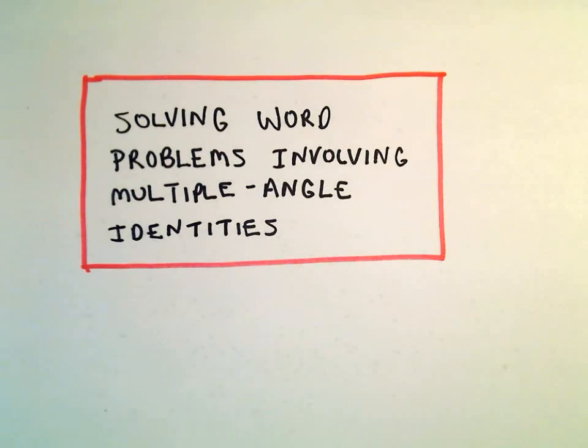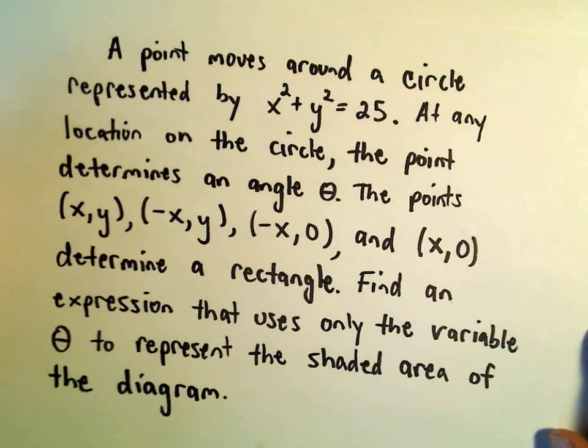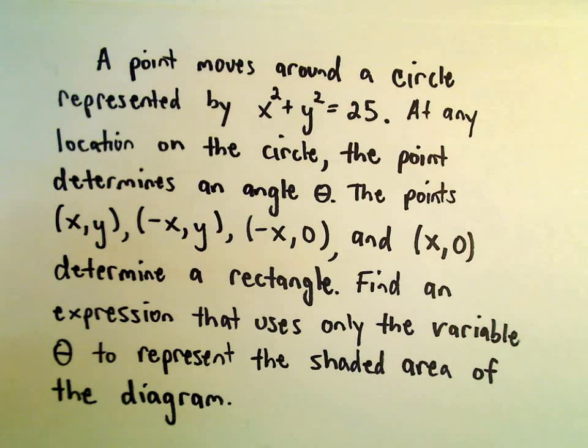Alright, so one more word problem here using some trig identity. Suppose we've got a point that moves around a circle given by x squared plus y squared equals 25.